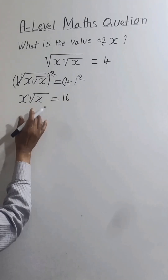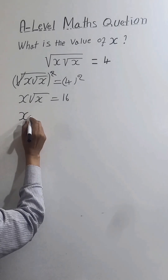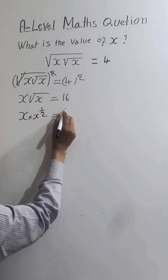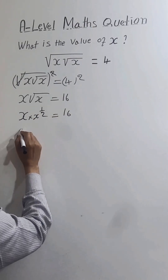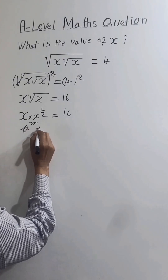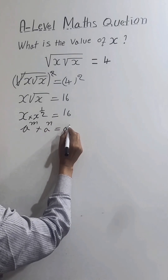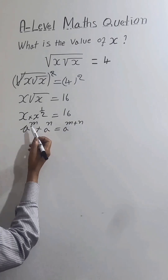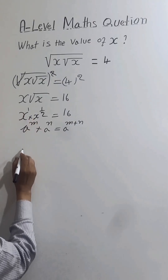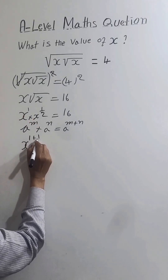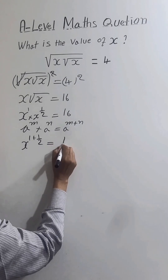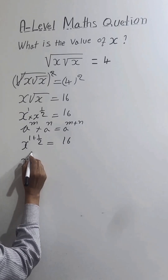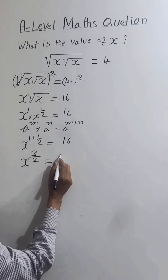Let's simplify the left side. So x times x to the power one-half equals 16. We know that a to the power m times a to the power n equals a to the power m plus n. Because we have the same base, we can add the powers. So this is x to the power 1 plus one-half, which equals x to the power 3 over 2, equals 16.